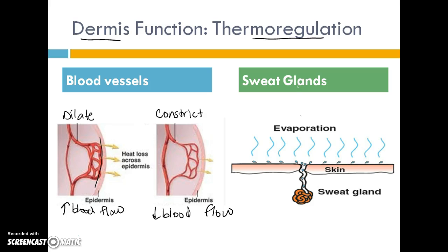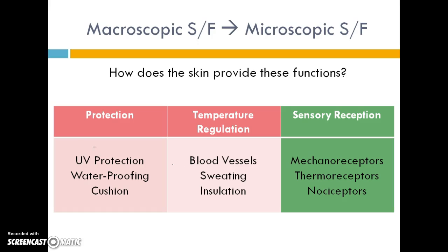Sweat glands can cool us off. It's not the production of sweat itself but the evaporation of sweat from the skin that creates the cooling effect. Interestingly, the evolution of our skin to have many sweat glands has helped humans rise to the top of the food chain — most mammals can only cool off by panting, while we can keep hunting as other animals overheat, because we cool down efficiently by sweating.